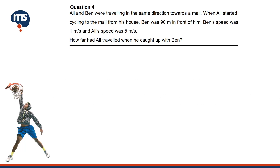Question 4. Ali and Ben were travelling in the same direction towards a mall. When Ali started cycling to the mall from his house, Ben was 90 metres in front of him. Ben's speed was 1 metre per second and Ali's speed was 5 metres per second. How far had Ali travelled when he caught up with Ben?